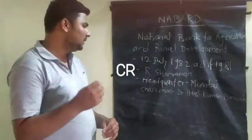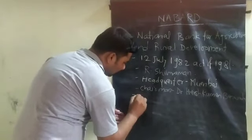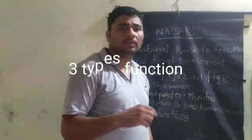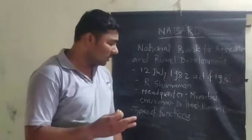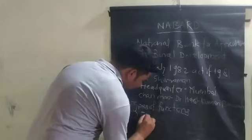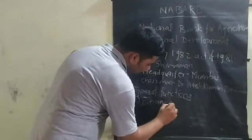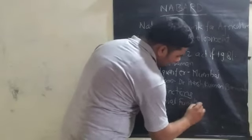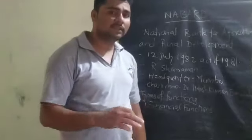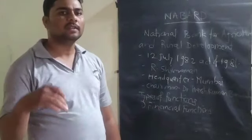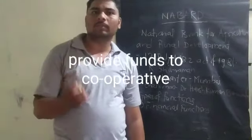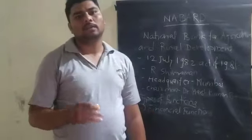There are three types of functions. The first function is Financial Functions, which includes Direct Finance and Re-Finance. Re-Finance means they provide funds to cooperative banks in the form of re-finance.